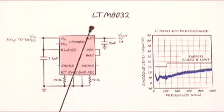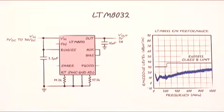The LTM8032 is a 36 volt in, 2 amp buck converter, capable of generating up to 10 volts. It needs just two resistors, an input cap and an output cap to get going. And as you can see, it beats the EN55022 class B limit by a wide margin.